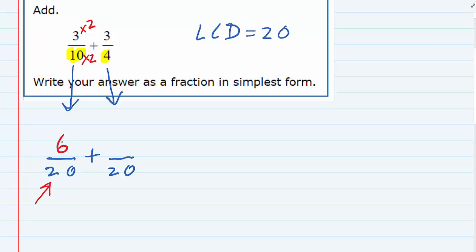For the one on the right, we need to turn that into something over 20, so the 4 would need to be multiplied by 5 to give me 20. Multiplying the top by 5 as well gives me 3 times 5, or 15.